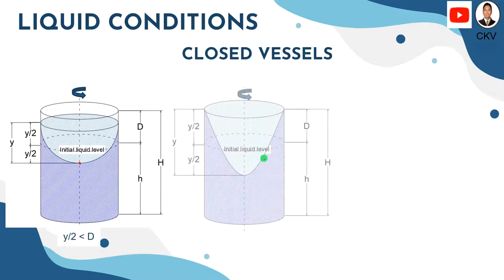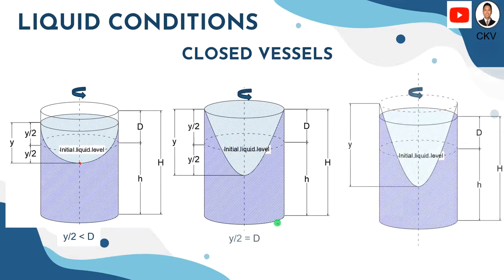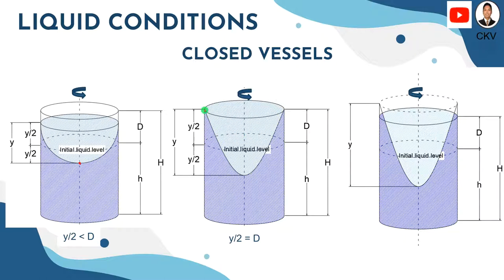The next condition is if Y over 2 equals D, meaning the liquid surface just touches the top rim of the closed vessel. Since it just touches this point on the side of the top portion of the cylinder, this is the same solution as with an open vessel since no liquid will be spilled.